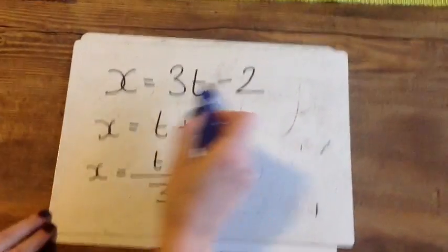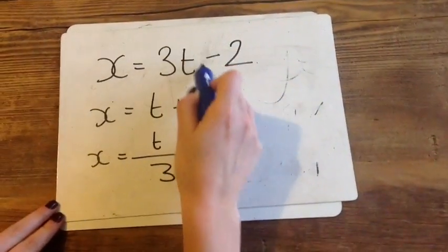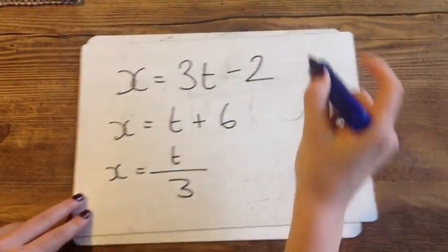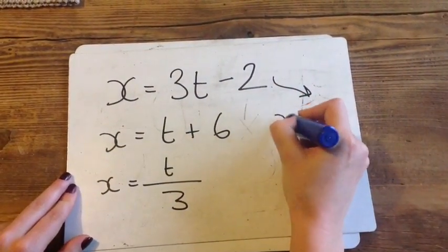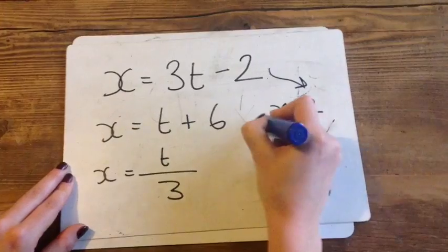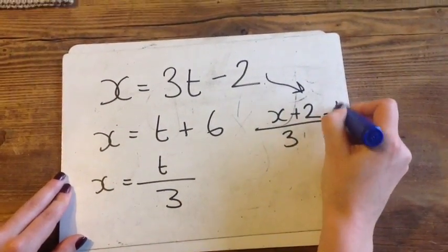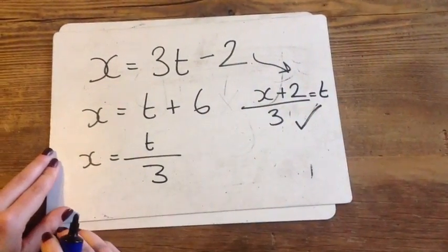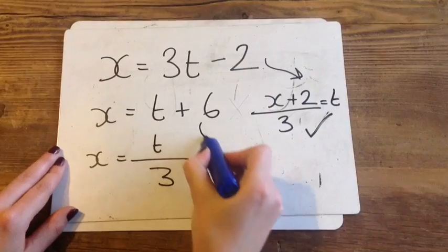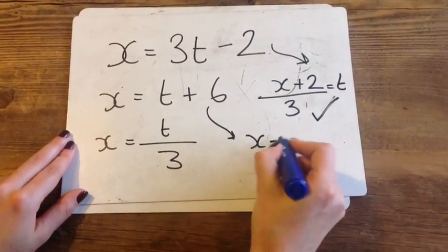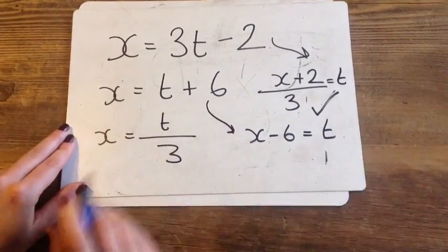Okay. This one. Start by moving the minus 2 and then the 3. So this one would be X add 2 divided by 3 equals T. Done. This one would be X take away 6 equals T. Done.